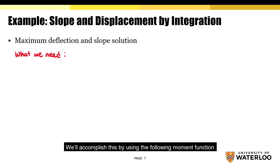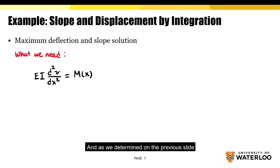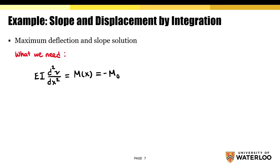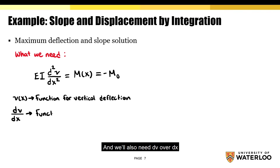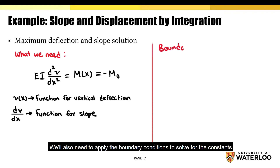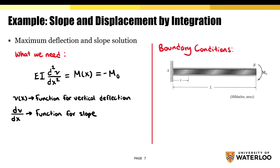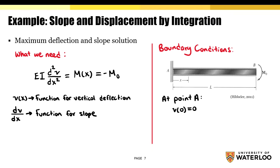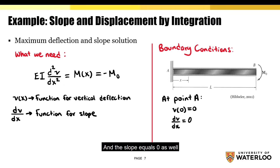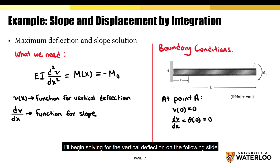We'll accomplish this by using the following moment function. As we determined, Mx equals negative MO. Using the moment function, we'll solve for Vx, where Vx represents the vertical deflection function. We'll also need dv/dx, where dv/dx represents the slope function. We'll also need to apply the boundary conditions to solve for the constants. At point A, we have a fixed support, so the vertical deflection equals 0 and the slope equals 0 as well.